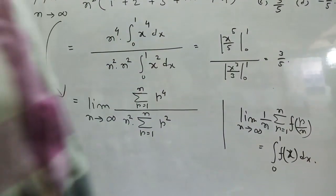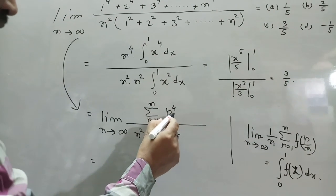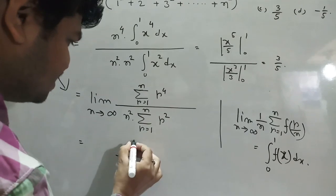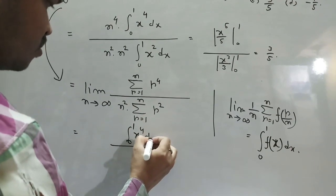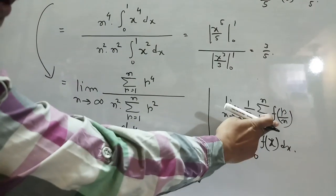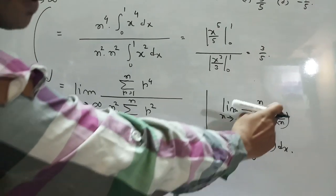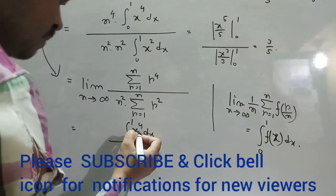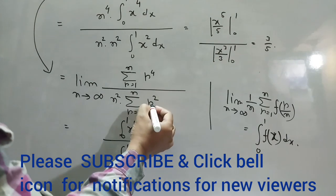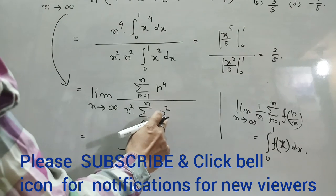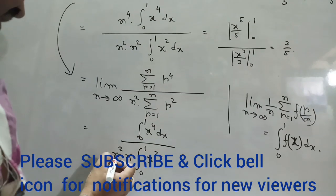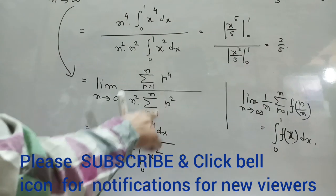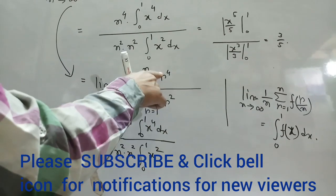That is, put x in place of r by n. So here, r power 4 becomes r upon n whole power 4, that is integral 0 to 1 of x power 4 dx. Because for r power 4, placing x in place of r upon n gives r power 4 upon n power 4, that is x power 4. And here 0 to 1, r upon n whole squared is x squared. For balancing, n squared is necessary — therefore n squared as it is. And in the other part, for balancing n power 4, because r power 4 upon n power 4 requires n power 4 balancing. Put x in place of r upon n.